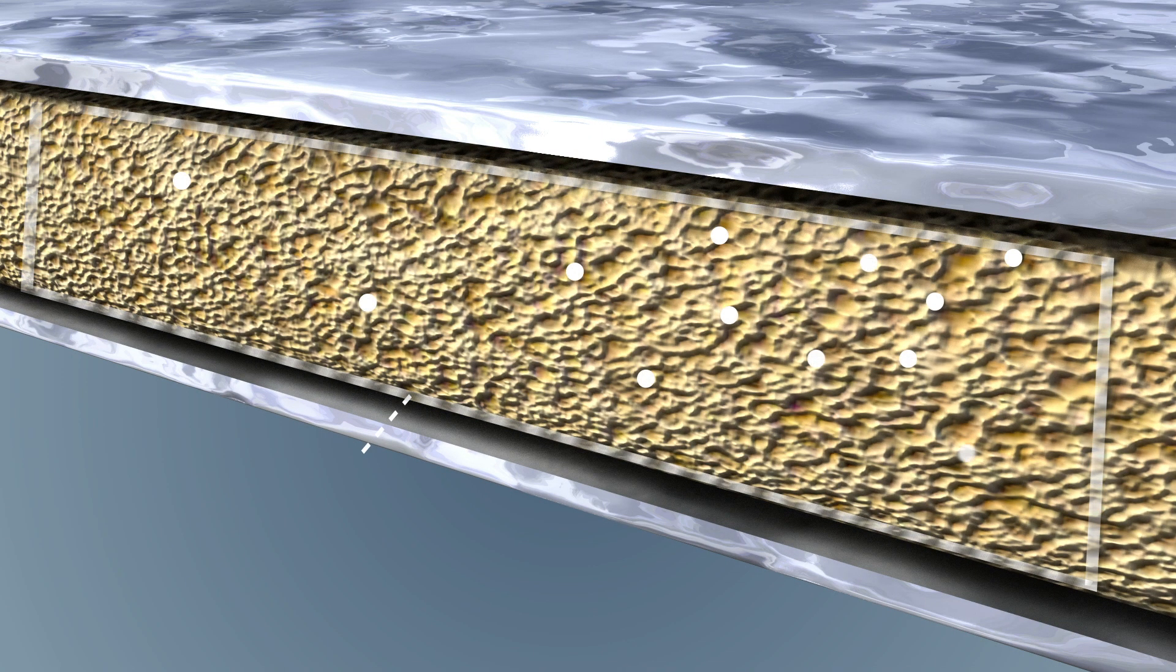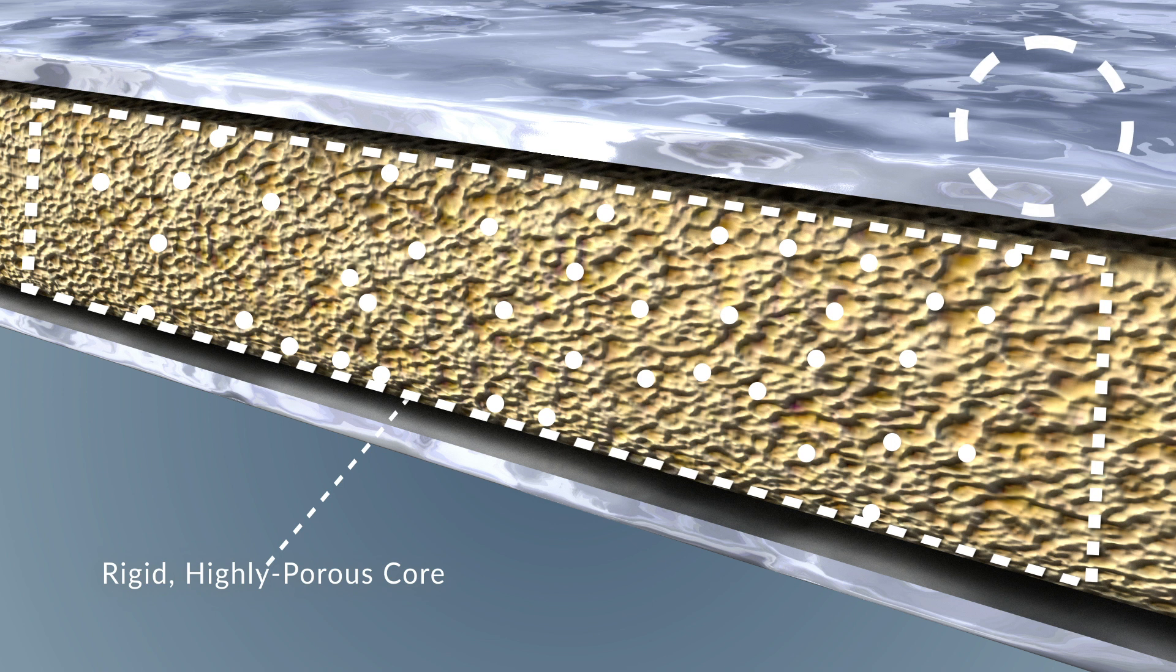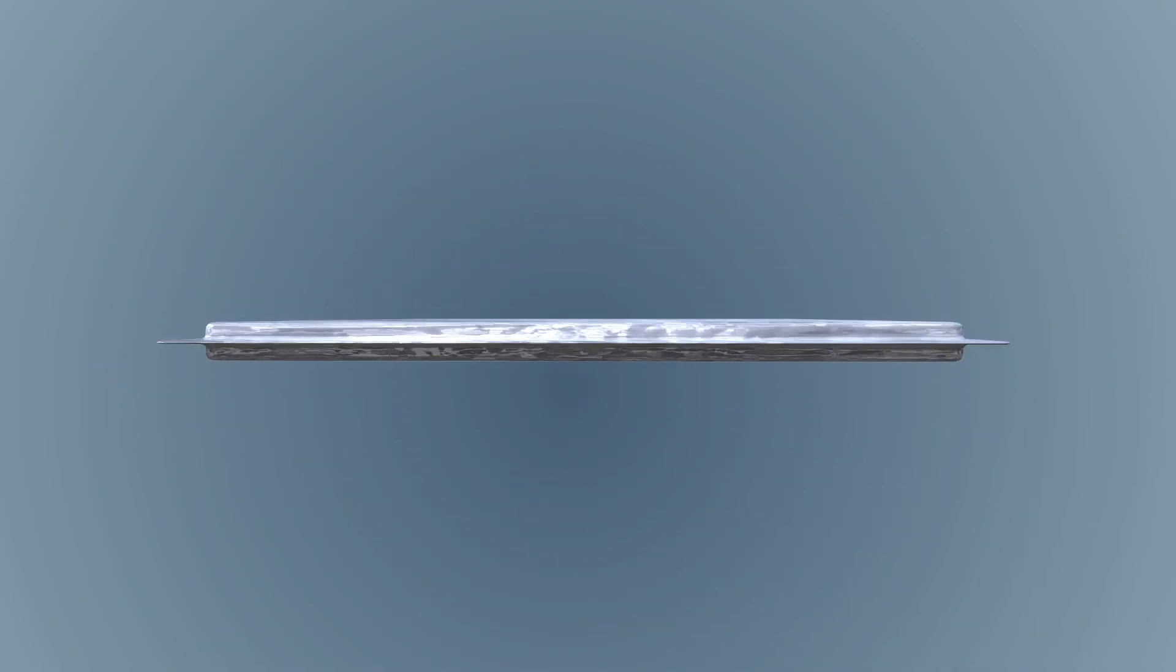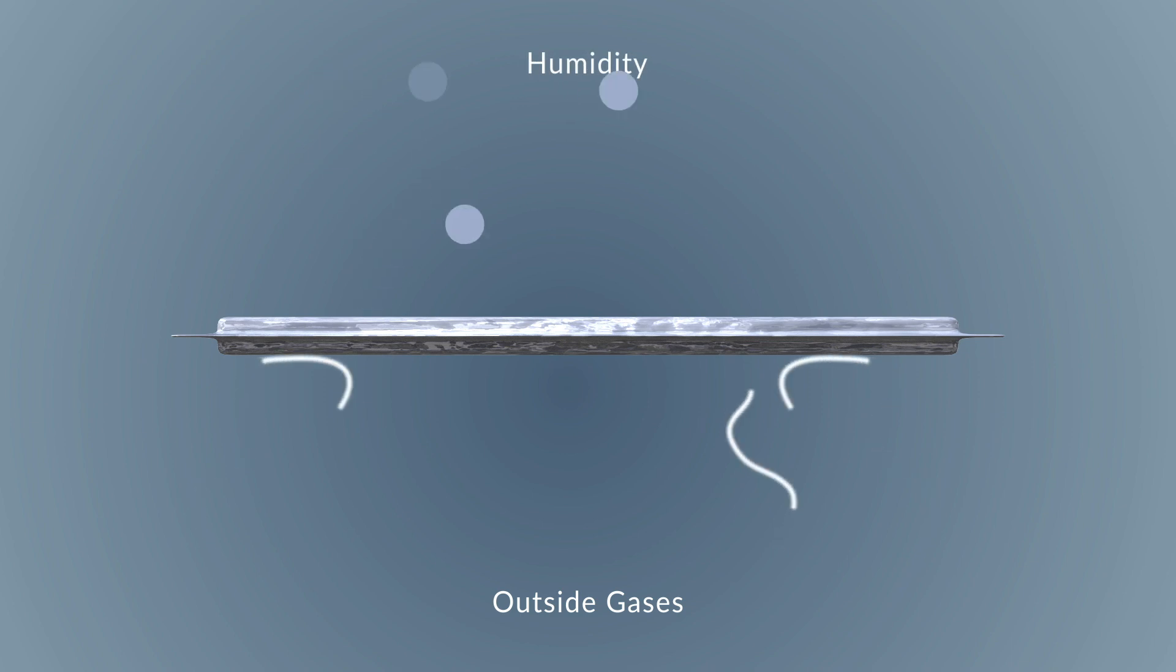VIPs are ultra-thin, high-performing insulation materials that consist of a rigid, highly porous core material encased in a thin, gas-tight outer envelope, which is evacuated and sealed to prevent outside gases and humidity from entering the panel.